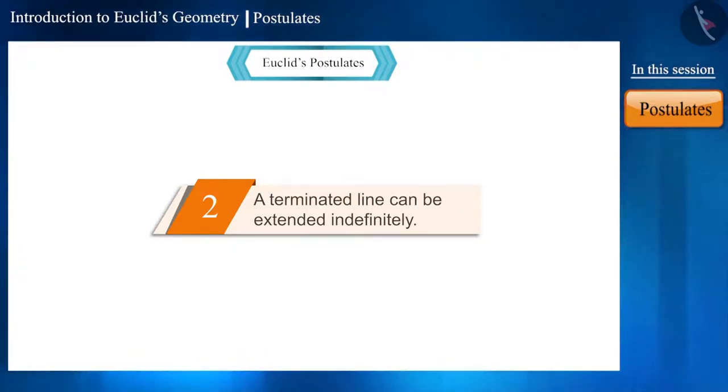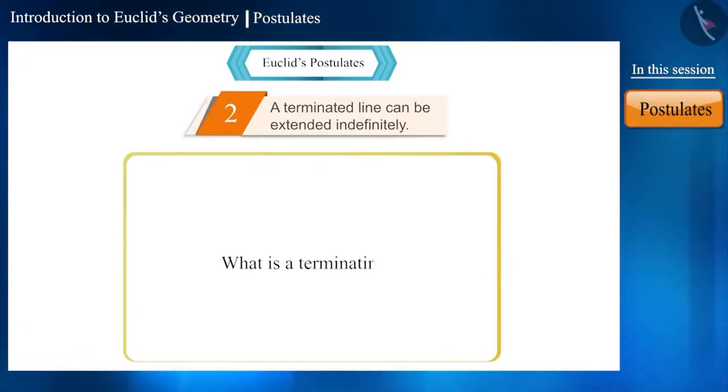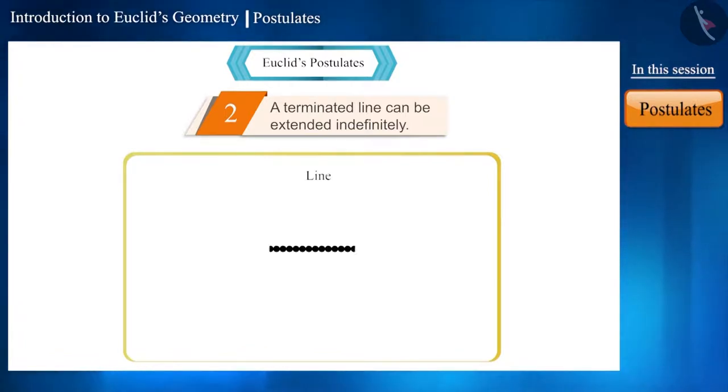Now let's understand the second postulate: a terminating line can be extended indefinitely. Friends, can you tell what is a terminating line? We know that a line is straight and a series of never-ending points, and we represent a line with arrows on both ends.